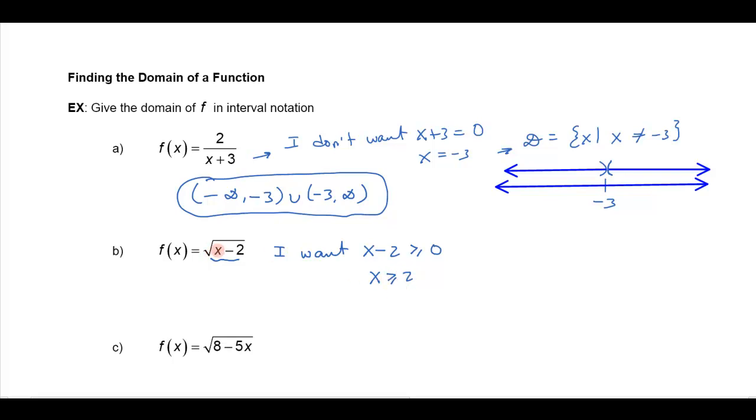So that just means x has to be greater than or equal to two. And if you plug in, like for example two, I get two minus two is zero, square root of zero is zero, that's okay. If I plug in three, three minus two is one, square root of one is one, that's going to work out. But if I plug in something smaller than two, like say one, one minus two is negative one, the square root of negative one is not a real number. So in this case, my domain is going to be the x greater than or equal to two.